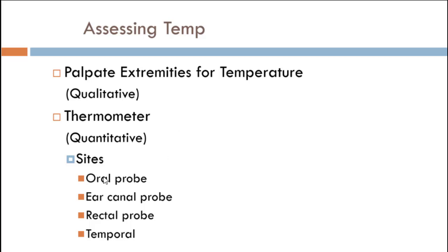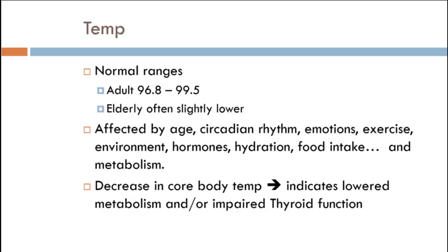Usually a thermometer in the mouth, in the ear canal, or rectal — which is the most accurate. What's becoming really popular now is temporal, so either a wand that's waved across the face, or those infrared lasers that give us an instant read on our temperature.